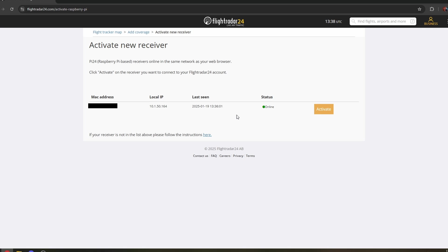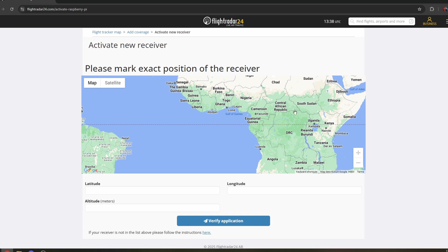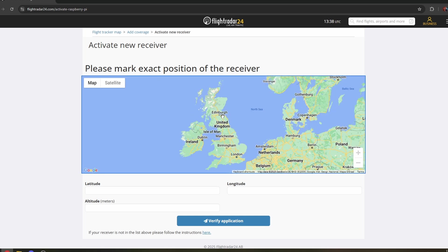Once we're into activating the receiver you should see your device listed here. If you don't, make sure that you're on the same network with your Raspberry Pi as you are your computer and then we will go activate. It then asks you to mark the position of your receiver. I am obviously in Edinburgh.